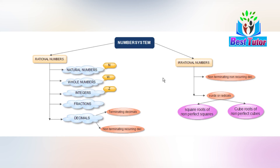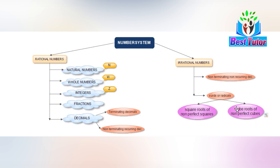Other irrational numbers are roots or radicals. If a is a rational number, then the nth root of a is called a radical of order n. If the nth root of a is irrational — for example, 2 is a rational number but root 2 is irrational, as proved in earlier videos — then all square roots of non-perfect squares are irrational numbers. Similarly, all cube roots of non-perfect cubes are irrational numbers. This completes the mind map related to the number system.